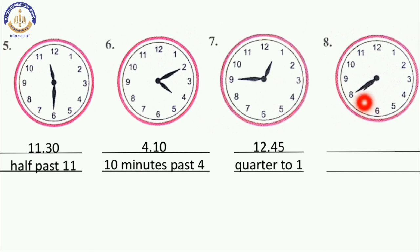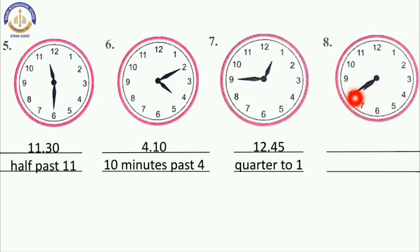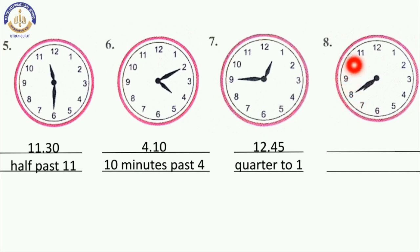Next one: the minute hand is on 8, that means 40 minutes. And the hour hand is between 7 and 8. So our time is 7:40. The minute hand is on the left hand side of this part, so time is to. Counting: 5, 10, 15, 20 — that is 20 minutes to 8. Write this in your textbook children.